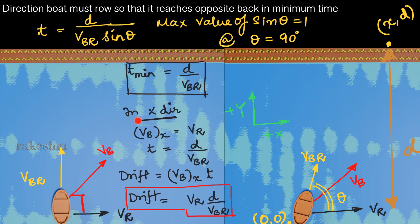In the x direction, the velocity of the boat is vr. The time has been calculated as d divided by vbr. The drift equals velocity in the x direction multiplied by time, which gives vr multiplied by d divided by vbr. So the horizontal distance drifted is vr·d/vbr.